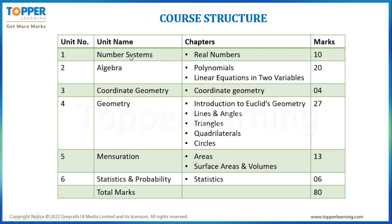This is how it will look. You will be having 6 units and you will be having different chapters in each of these 6 units. The first unit is Number Systems. It will be having only one chapter, which is Real Numbers, and it will be of a total of 10 marks.